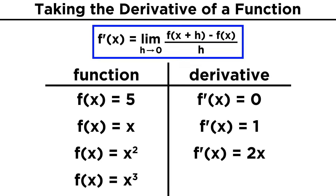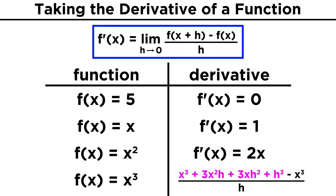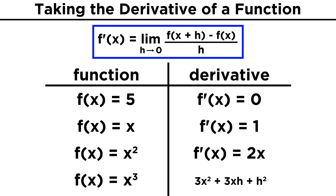Let's do one more — x cubed. Now we have x plus h quantity cubed, minus x cubed. We should know how to cube this binomial by FOILing two of them and then multiplying the result across the third binomial. But for the sake of time, this will be x cubed plus three x squared h plus three x h squared plus h cubed. We subtract x cubed and we get this. Dividing through by the h on the bottom, we get three x squared plus three xh plus h squared. As h approaches zero, we are left with three x squared, so the derivative of x cubed is three x squared.